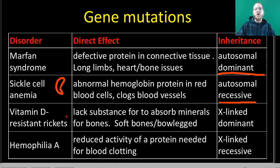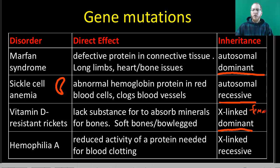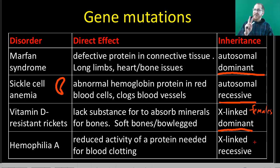Vitamin D resistant rickets is where you can't properly store calcium in your bones, so your bones tend to be softer and more flexible, which can lead to things like bow legs. This one is X-linked dominant because it doesn't outright kill you — it just makes you look a little different, especially in the legs. Because it's X-linked dominant, females are actually affected more commonly: males only have one X chromosome to get the dominant allele, while females have two chances. Since the dominant allele is harmful, even a single dominant copy gives you rickets.